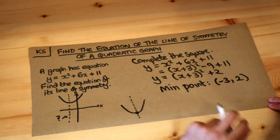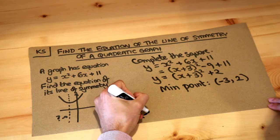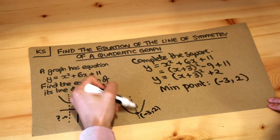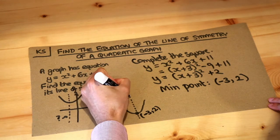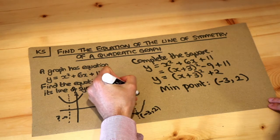Now what therefore is the equation of the line of symmetry? Well if this point is minus 3, 2, well this is a vertical line, we know it has equation of the form x equals something, and it will just be whatever that x value is here, so it's minus 3.